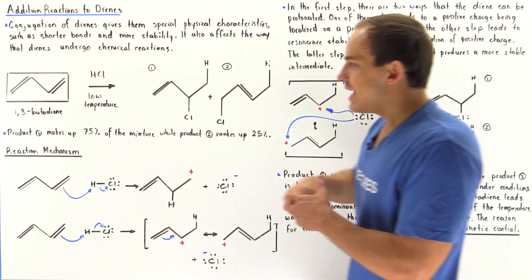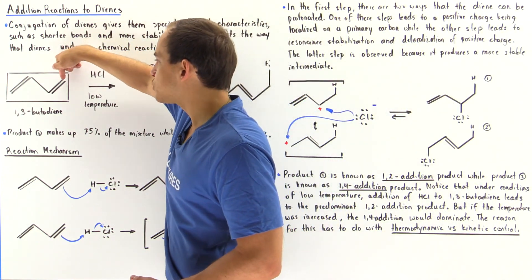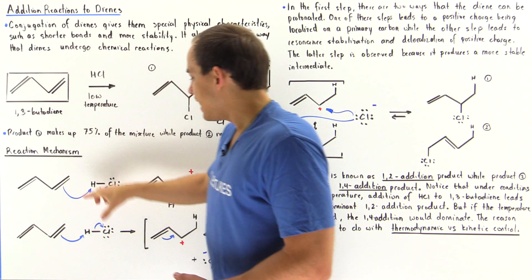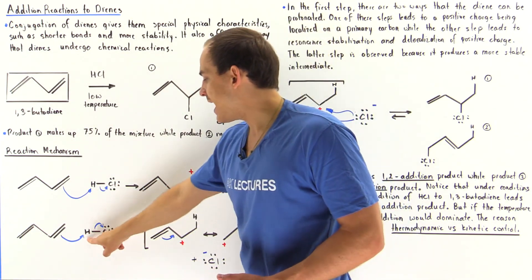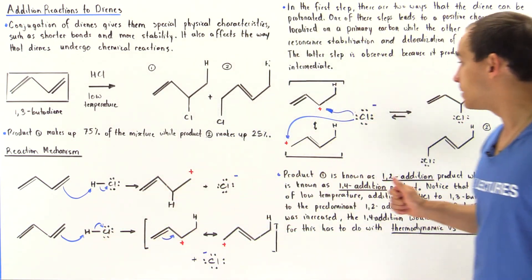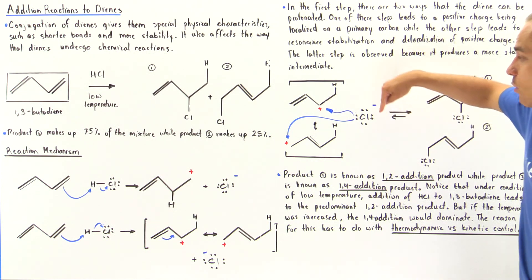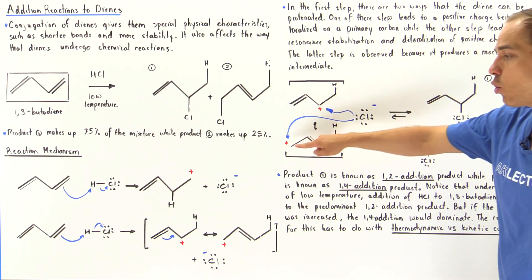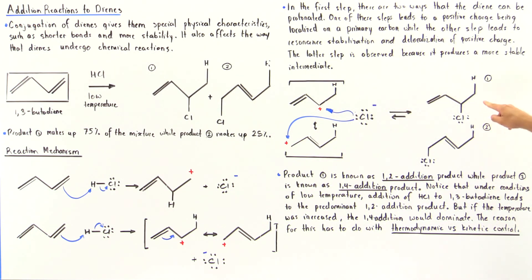Once again, if we count the carbons, it's 1-2-3-4. In the first protonation step, the H goes onto the first carbon. In the second step, our Cl can either go on the second or fourth carbon. So this is called the 1-2 addition and 1-4 addition.